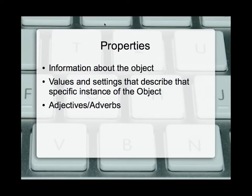Properties are the information about that object — the size, what's inside it, the text that's in there. An analogy is that properties are the way of getting the things that describe that object. Going back to our English analogy: adjectives and adverbs describe objects. So objects are nouns, and nouns are described by adjectives. Properties are ways of describing our nouns, which are our objects. Properties look like adjectives; objects look like nouns.